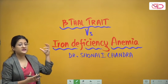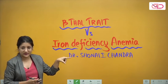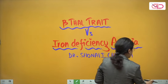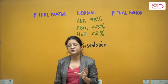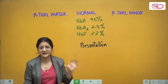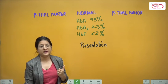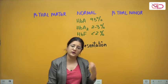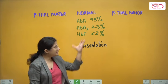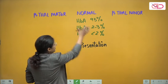Why am I talking about beta thal trait particularly when discussing iron deficiency anemia? The primary difference is that beta thal major occurs when there is a severe or complete absence of beta chain synthesis. Homozygous individuals have beta thal major, while heterozygous individuals have one abnormal copy and one normal copy — their beta chain synthesis is affected only mildly. Beta thal minor will have only mild anemia or may be entirely asymptomatic.